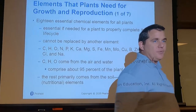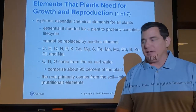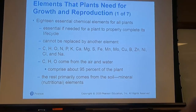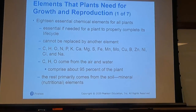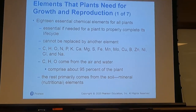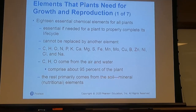For our 18 essential chemical elements — scientists don't always agree, so for the purpose of this class we'll stick with the ones covered here. Carbon, hydrogen, and oxygen make up about 95% of the plant because they form our cellular structures: lignin, cellulose, hemicellulose, fats, lipids, and triglycerides.